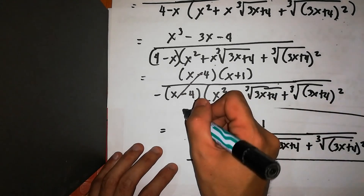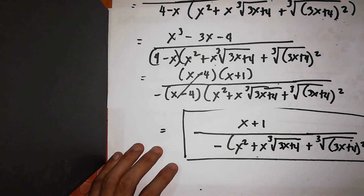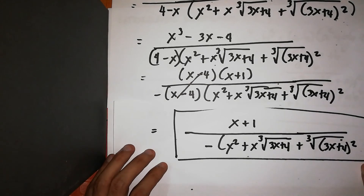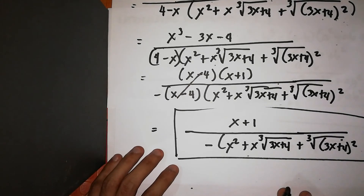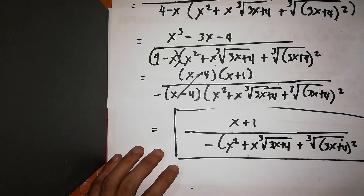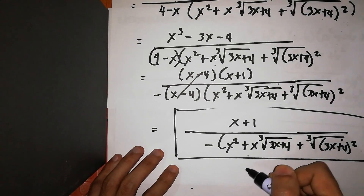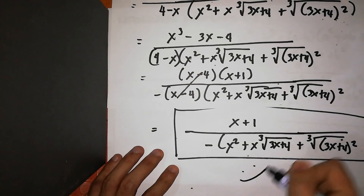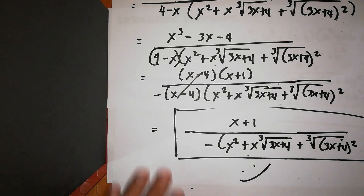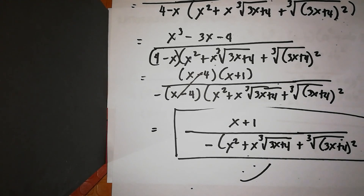So this is how to rationalize the numerator involving cube root. Thank you.